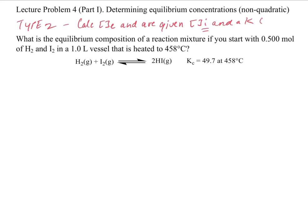This one involves an ICE table because we're not getting equilibrium concentrations — we're getting initial concentrations. There are two flavors of this, but the setup is the same. When we get to a certain point, you'll either be able to solve it without the quadratic equation or you won't, and that's how you'll decide.